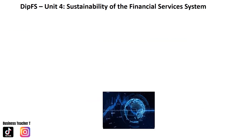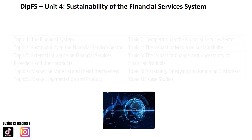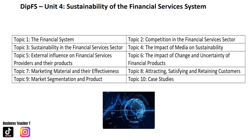Moving on to Unit 4, Sustainability of the Financial Services System. Unit 4 looks at things like how providers work with each other, marketing, social and ethical factors, and the impact of the media on financial providers. It moves away from Units 1, 2 and 3, which focused more on individuals and personal finance, and now focuses very much on the providers.